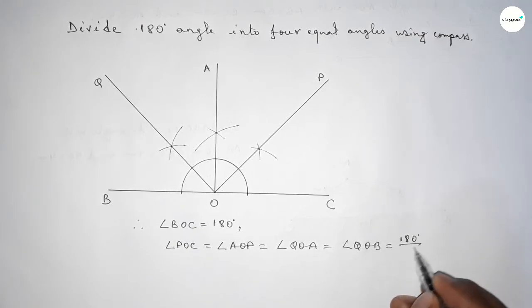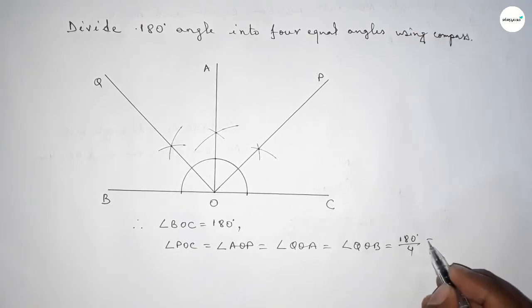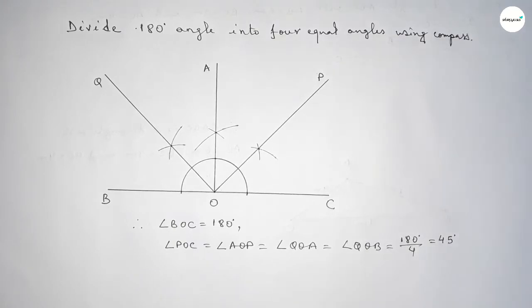180 degrees divided by 4 gives 45 degrees each. So that's all. Thanks for watching — if this video is helpful to you, please share it with your friends.